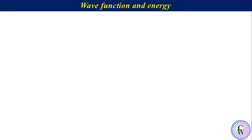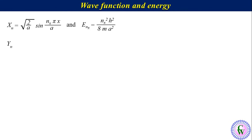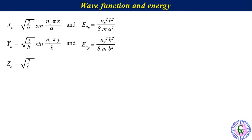The solution of equation 6 gives the x-dependent wave function and energy along the x-axis: X_nx equals sqrt(2/a) times sin(nx·π·x/a), and E_nx equals nx²h²/(8ma²). Similarly, solution of equation 7 gives Y_ny equals sqrt(2/b) times sin(ny·π·y/b) and E_ny equals ny²h²/(8mb²). Solution of equation 8 gives Z_nz equals sqrt(2/c) times sin(nz·π·z/c) and E_nz equals nz²h²/(8mc²).